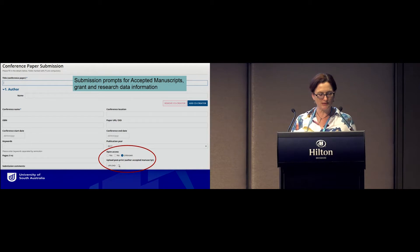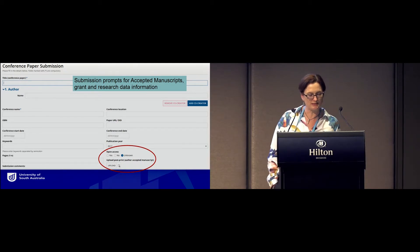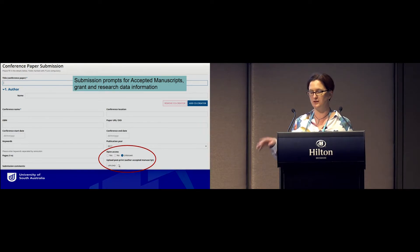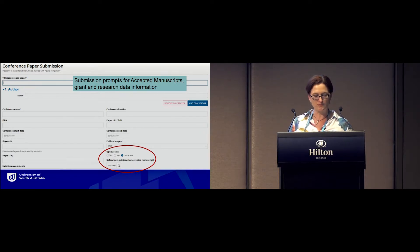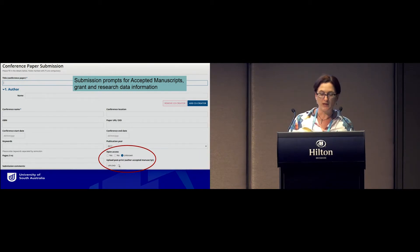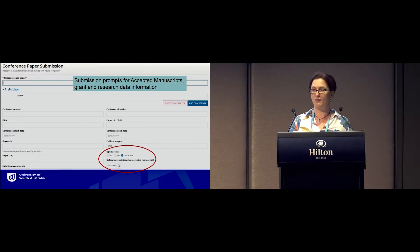Our new process included an online submission system with pre-population of metadata using a DOI lookup of Scopus or Web of Science, with the aim to reduce the impact on researchers having to manually enter anything. The submission form also includes prompts for uploading accepted manuscripts and asks about open access. We have a second page of the form that actually asks about grant and related data set information that often can only be captured from the researcher.